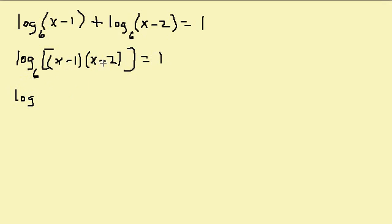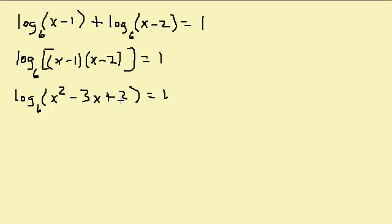Expanding that out, I get x squared minus 3x plus 2, and that equals 1. Now I have a single logarithm equals a number, so I'm going to change this to exponential form. That gives me 6 to the first power equals x squared minus 3x plus 2.